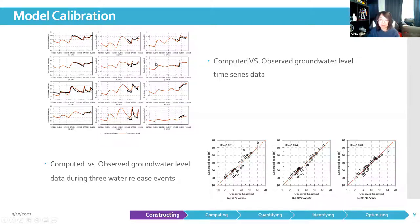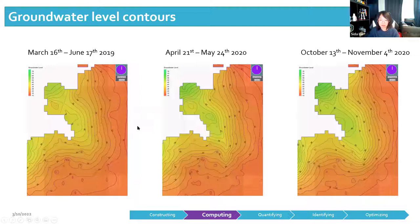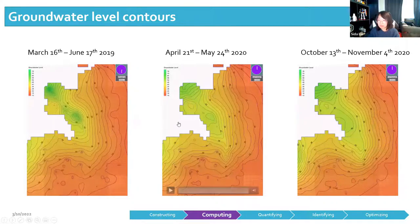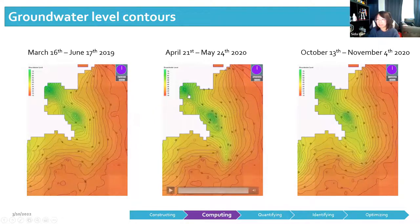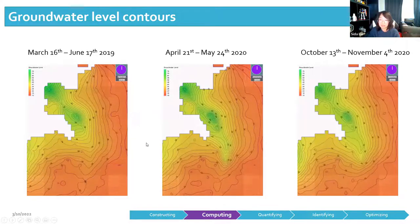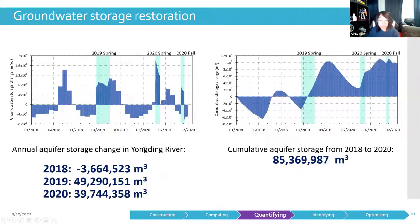Here is the groundwater level contour map during the three water release events. The groundwater level under the riverbed and surrounding areas has been increased significantly, and the maximum groundwater level increase can be more than 20 meters. From the water balance results, we can clearly see that groundwater storage has been restored after the implementation of managed aquifer recharge. Compared to the beginning of 2018, the groundwater recharge has increased by a total of 85 million cubic meters.